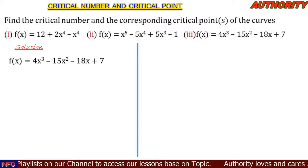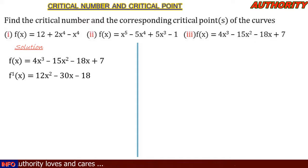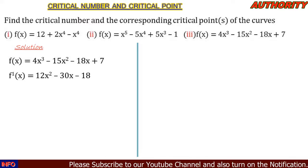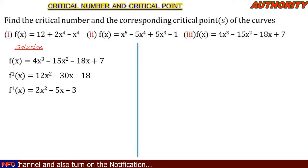For number 3, f(x) = 4x³ - 15x² - 18x + 7. Differentiating gives f′(x) = 12x² - 30x - 18. We can reduce by dividing by 6: 12÷6 = 2, 30÷6 = 5, 18÷6 = 3. So f′(x) = 2x² - 5x - 3.